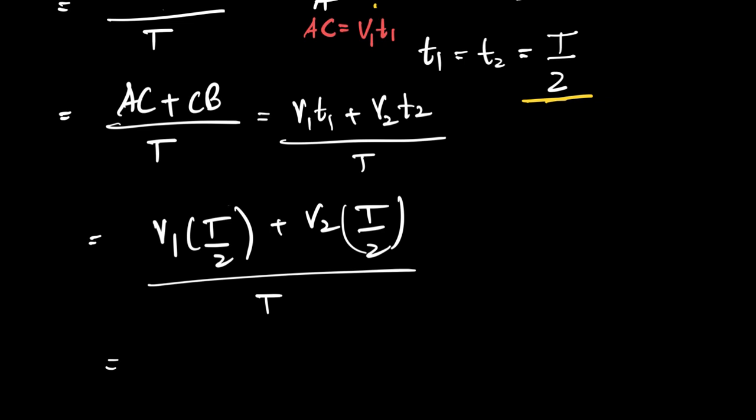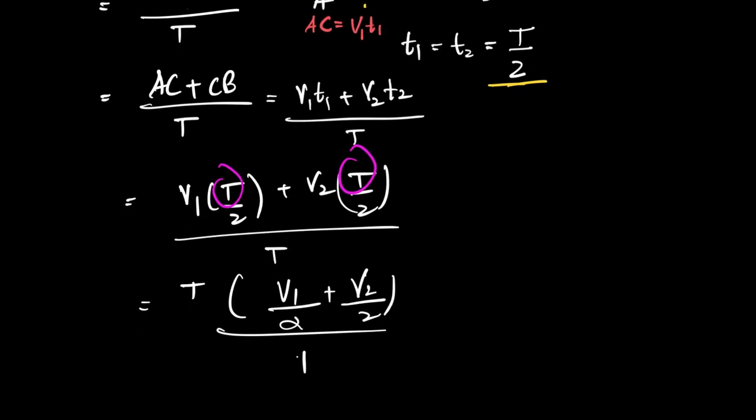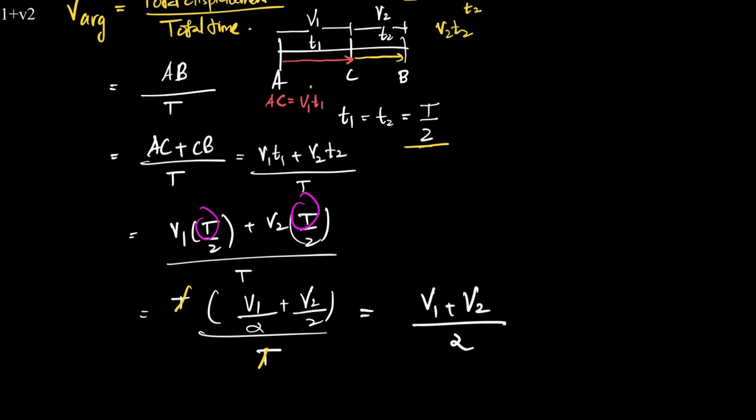What you can do is we can take T common from the numerator. So T will be common from the numerator, and if you take that T outside, what do we have? We have v1 by 2 plus v2 by 2, the whole upon T, which basically means that T and T will now cancel off. And what will we get? We will get v1 plus v2, the whole upon 2. Therefore, the final average velocity for the entire motion would be the mathematical average of the two velocities.